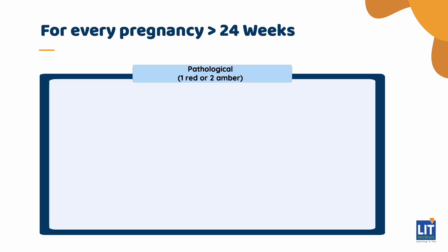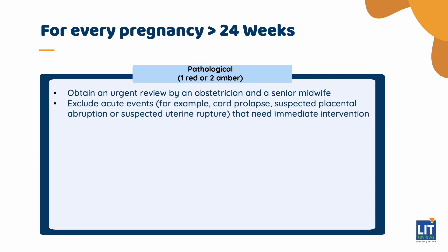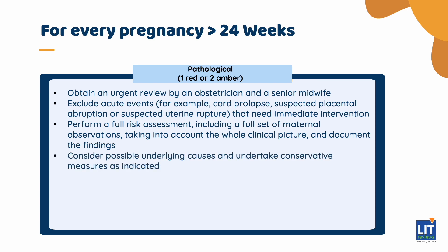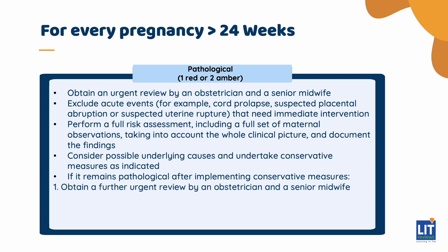For the pathological category, which is one red or two amber features, obtain an urgent review by an obstetrician and a senior midwife. Exclude acute events such as cord prolapse, suspected placental abruption, or suspected uterine rupture that need immediate intervention. Perform a full risk assessment including a full set of maternal observations, taking into account the whole clinical picture, and document the findings. Consider possible underlying causes and undertake conservative measures. If it remains pathological after implementing conservative measures, obtain a further urgent review and evaluate the whole clinical picture, considering expediting birth.